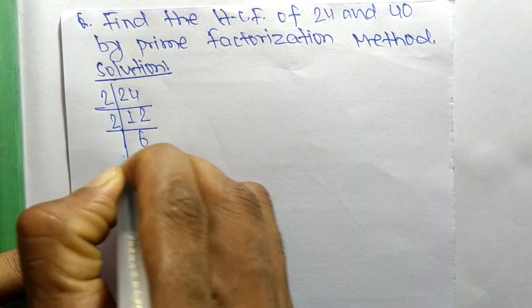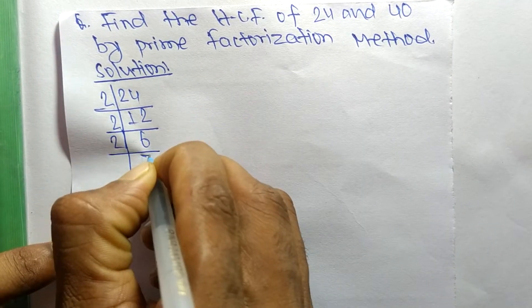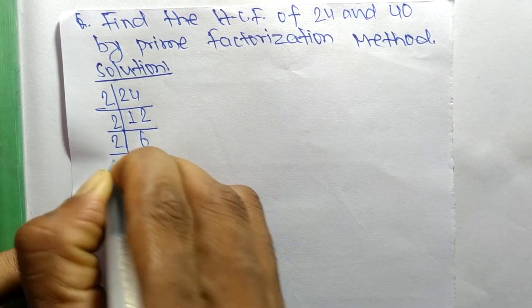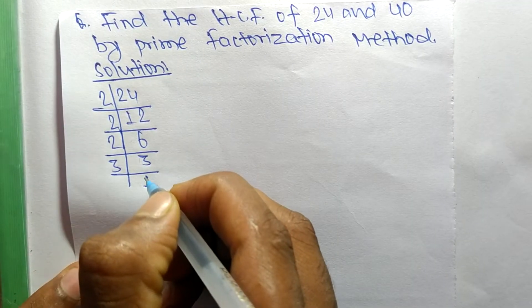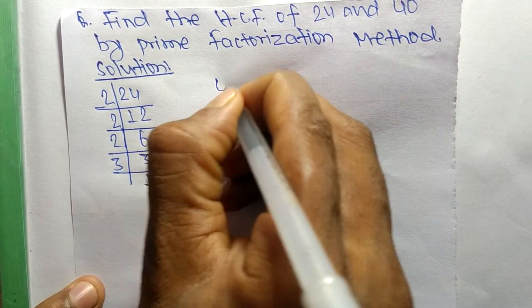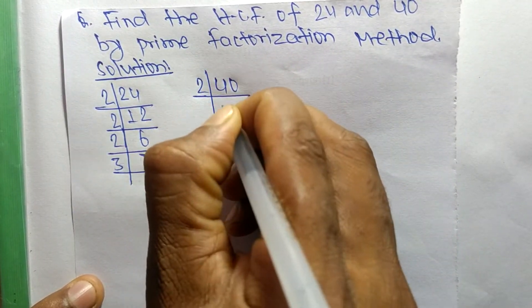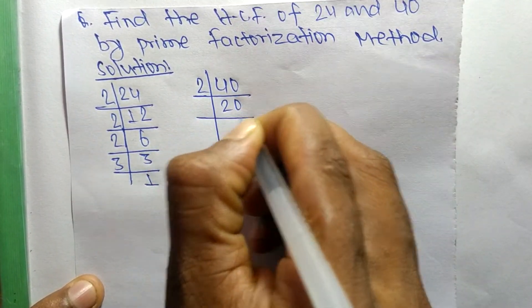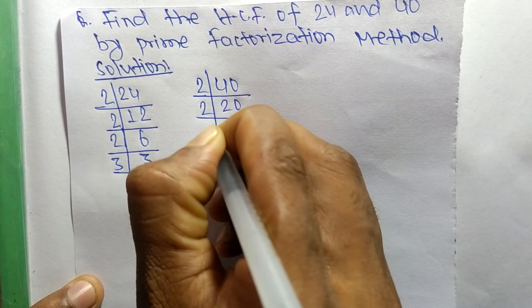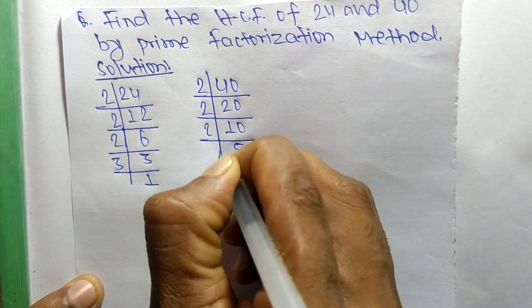2 times 3 means 6, and 3 times 1 means 3. Likewise, the prime factors of 40 are: 2 times 20 means 40, 2 times 10 means 20, 2 times 5 means 10, and 5 times 1 means 5.